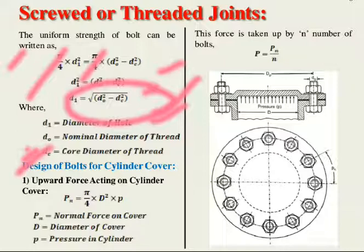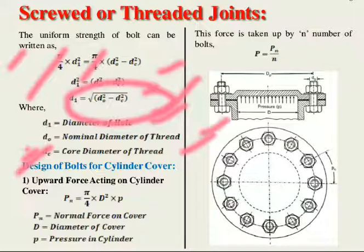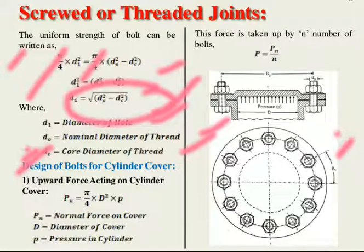Next, the design of the bolt for a cylindrical cover. Looking at the figure, you can see the bolt arrangement — a top view and a sectional view. The nomenclature includes: D as the diameter of the cylinder, dp as the pitch circle diameter, pc as the circumference, d0 as the nominal bolt diameter, and p as the pressure.